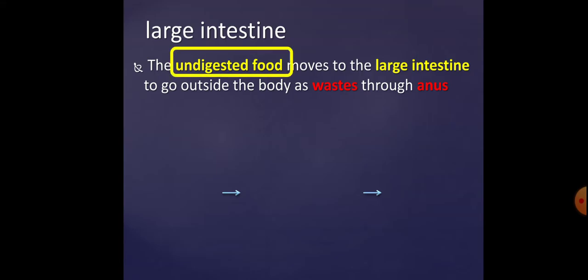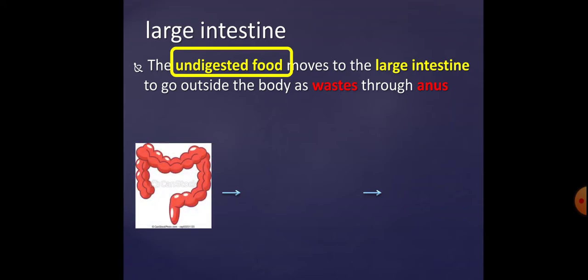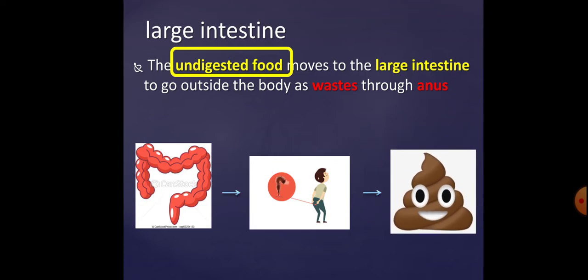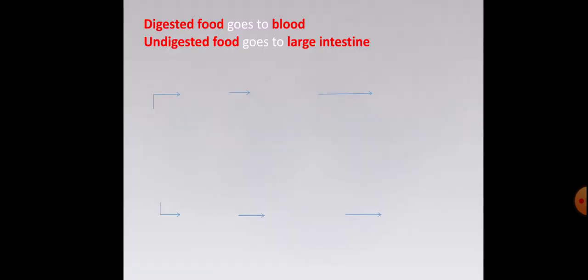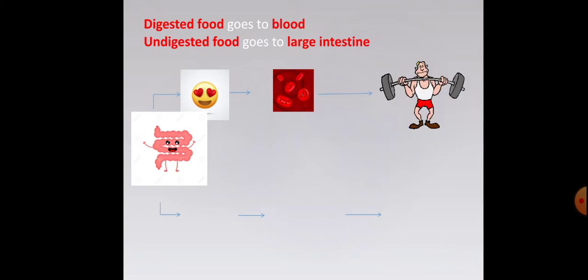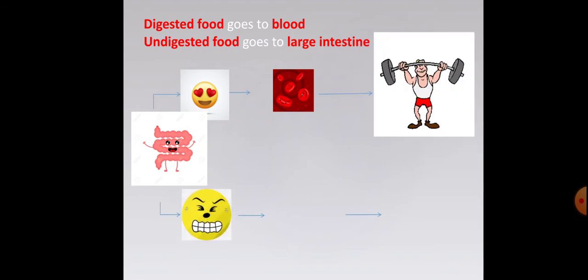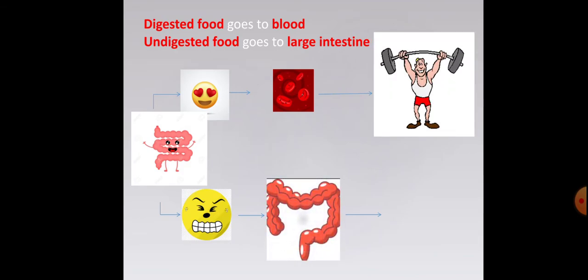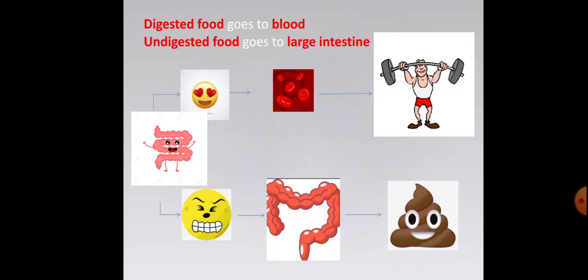The undigested food goes to the large intestine and then exits our body as waste through the anus. To summarize: in the small intestine, the digested food — the good parts — goes to the blood and is carried all over the body to keep us healthy. The undigested parts pass to the large intestine and are expelled from the body.